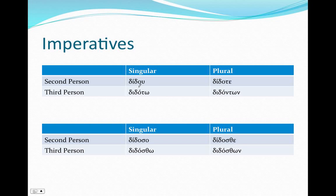Now, the imperatives. One that will catch you is 'didou.' But otherwise we've got the stem — the short stem — and the endings: didoto, didote, didonton. And in the middle/passive, remember these are present: didoso, didosthai, didosto, didosthai, didoston.